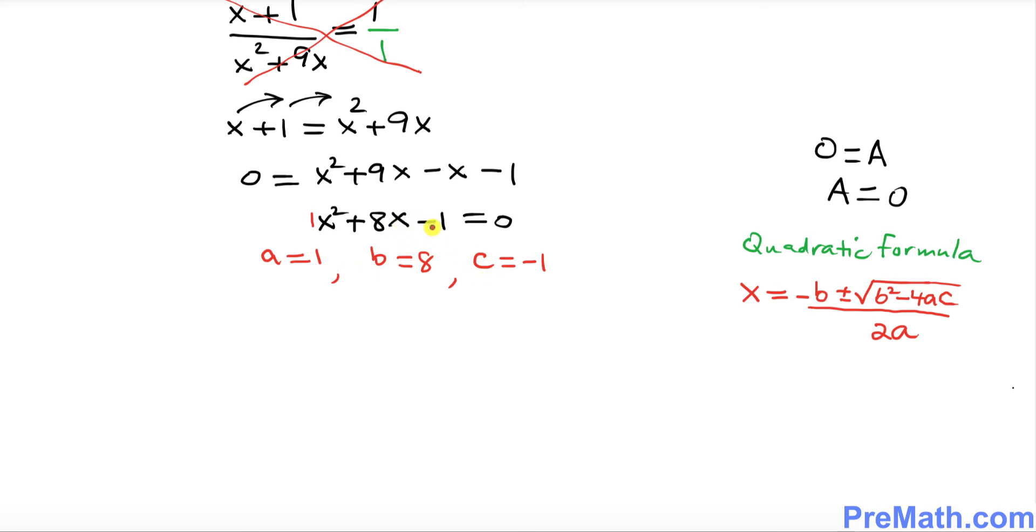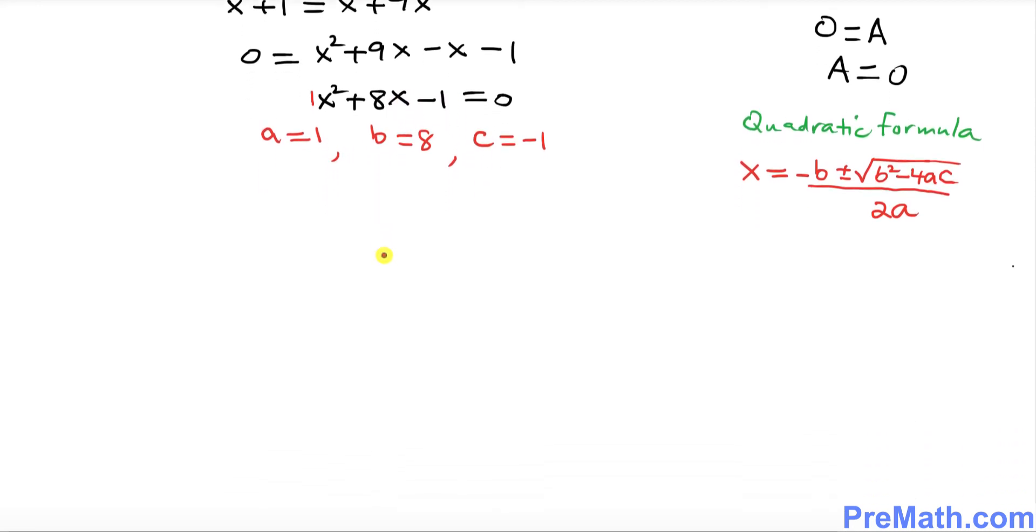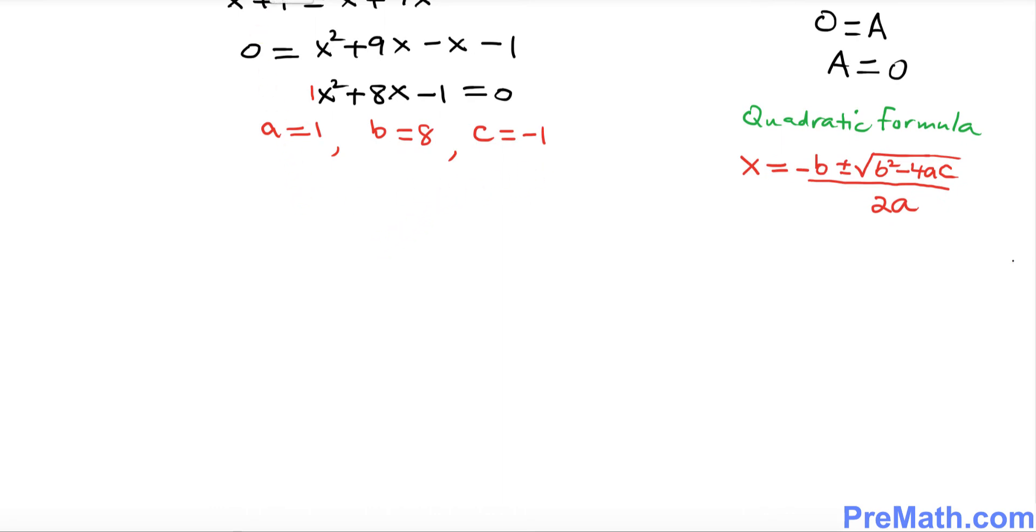Let's go ahead and plug it in. That's going to give us x equal to -b, which means -8, plus or minus b squared, which means 8 squared, minus 4 times a (which is 1) times c (which is -1), everything divided by 2 times 1.